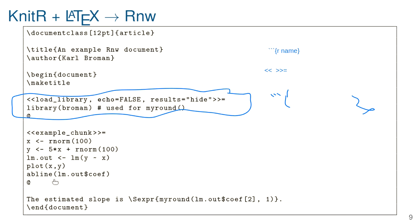For inline code chunks, instead of using backtick-r as in R Markdown, we use an S-expression with curly braces — something that looks more like a LaTeX construct. Otherwise, your use of R code chunks within LaTeX is identical to use within R Markdown — the only difference is the syntax that delineates the code chunks and inline code.